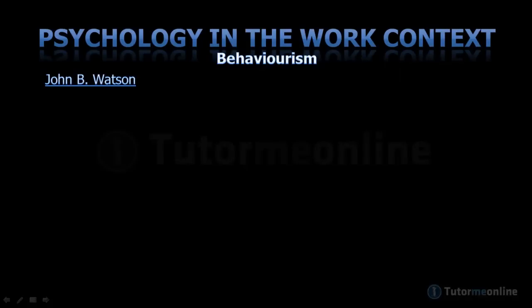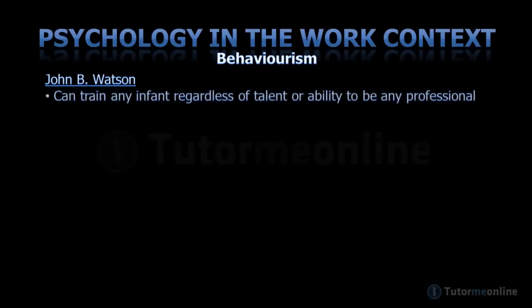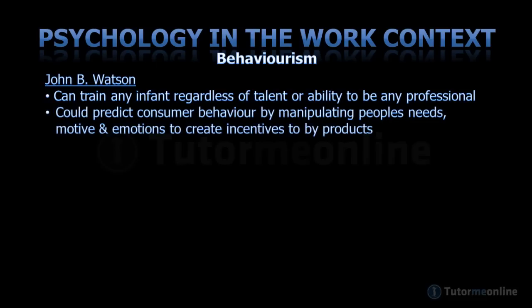John Watson believed that he could train any infant regardless of talent or ability to be a professional. He thought that he could predict consumer behavior by manipulating people's needs, motives, and emotions to create incentives to buy products. His theory was influential until around about 1930.